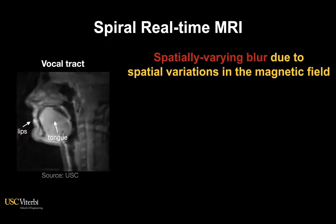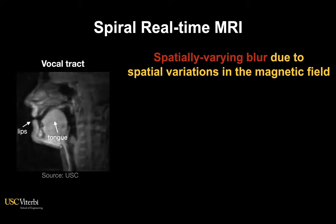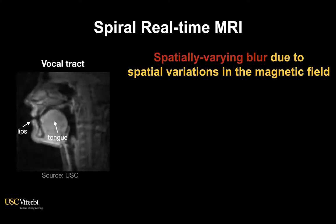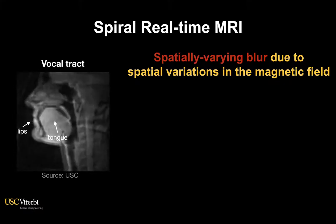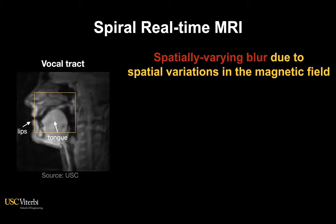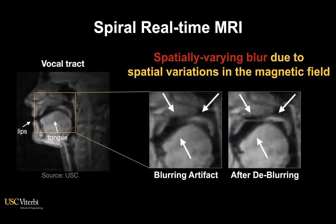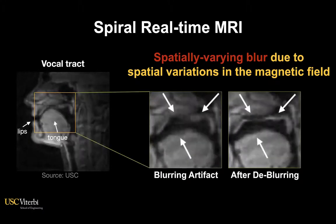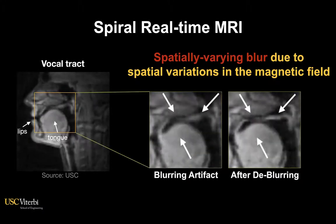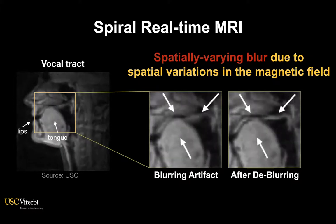However, a fundamental limitation of spiral real-time MRI is that it suffers from spatially varying blur that is based on spatial variations in the magnetic field. This blurring is spatially varying and is most severe at the articulator boundaries.